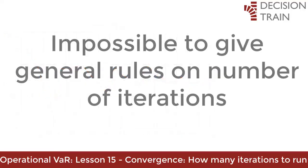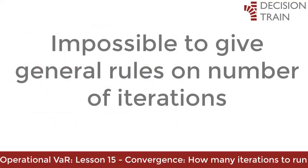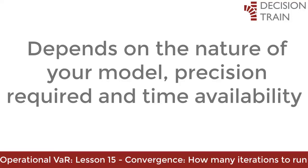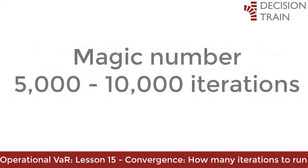To summarize, it is impossible to give general rules about how many iterations are required. It all depends on the nature of your model, the precision you require, and the availability of time. In general, the more iterations that are simulated, the more time and precision to expect. In my experience, the magic number usually starts around 5,000 to 10,000 iterations. Most processes do not converge successfully after only 200 or 1,000 iterations, and most of the time more than 20,000 iterations will not gradually improve your accuracy — but it all depends on the user's preferences.